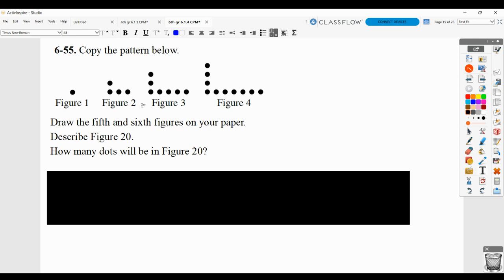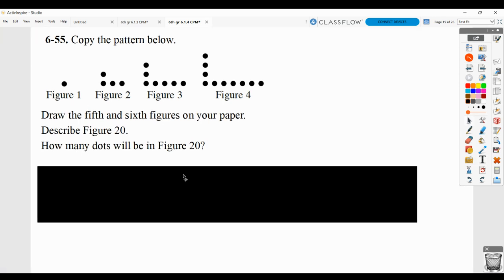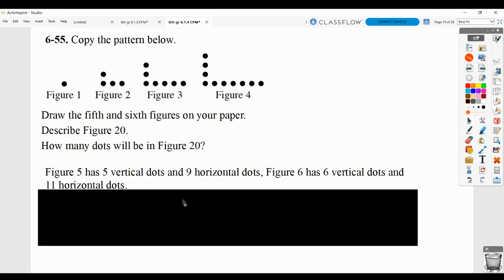So, here you have to copy the pattern, draw the 5th and 6th figures on your paper. So, what we want you to notice is that, in terms of the pattern, figure 5 will have 5 vertical dots and 9 horizontal dots. Well, how do we know that?